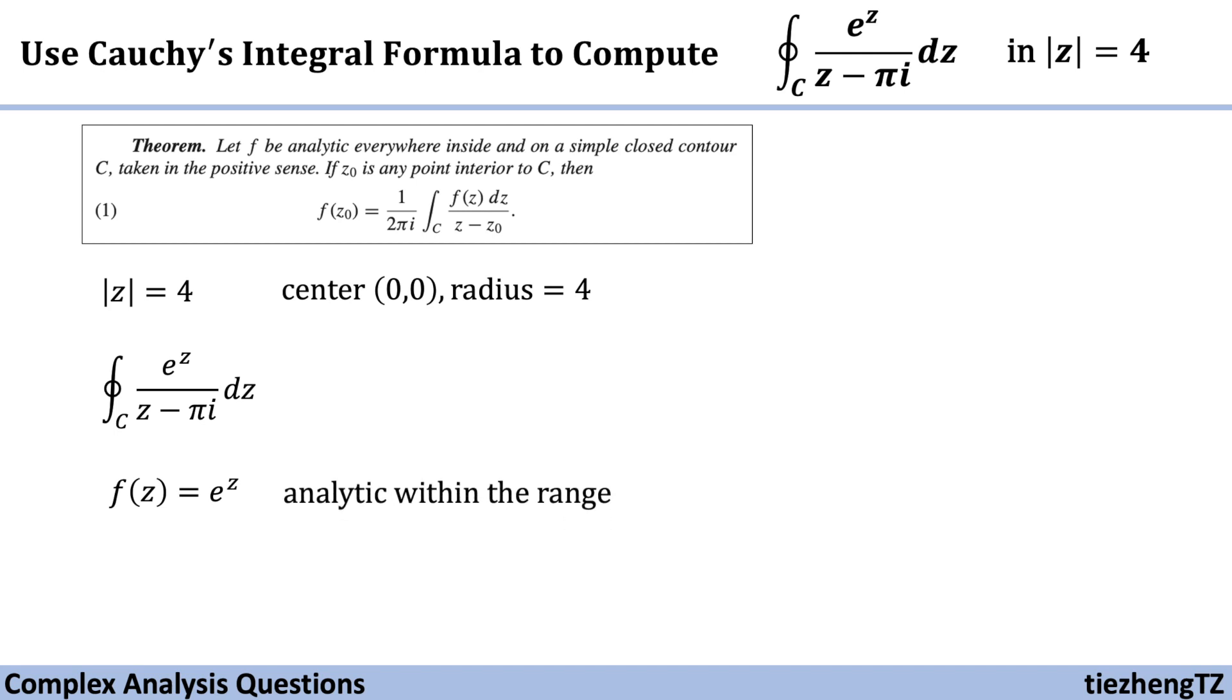We know this function f is analytic everywhere inside this contour, and we can also make z₀ = (0,πi).